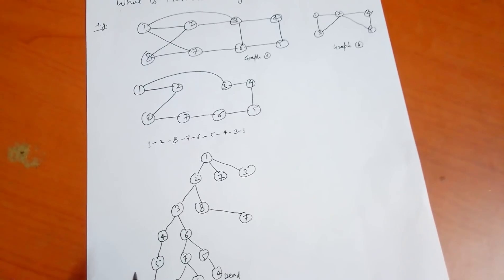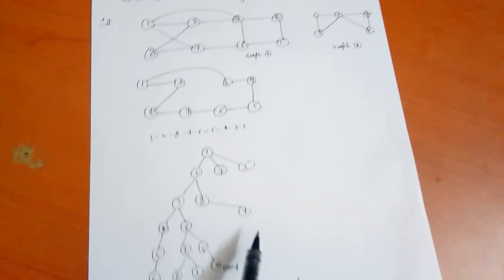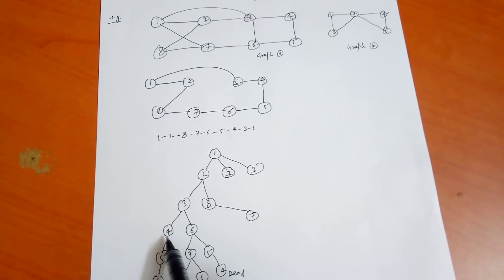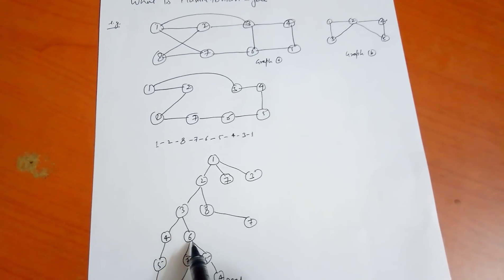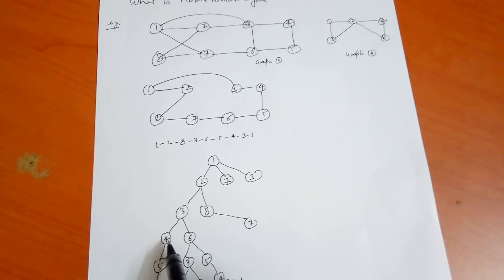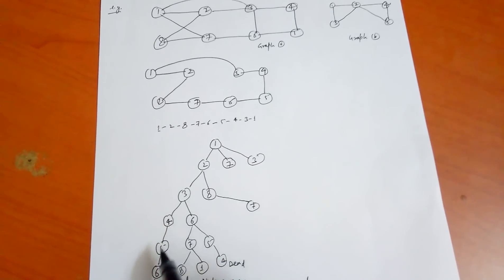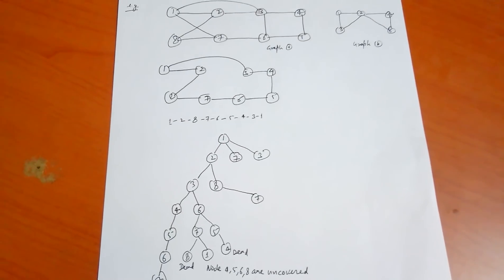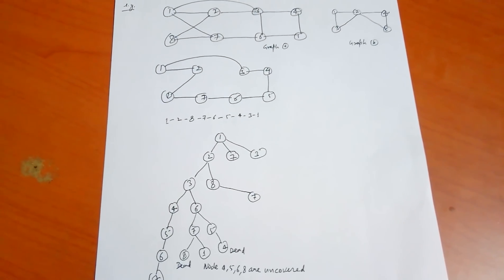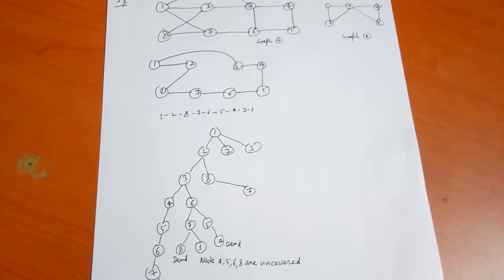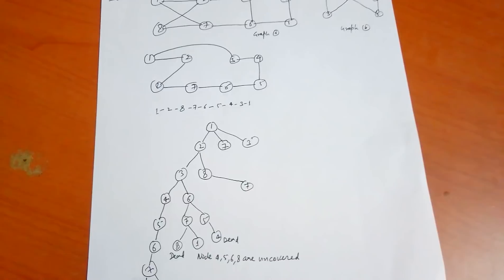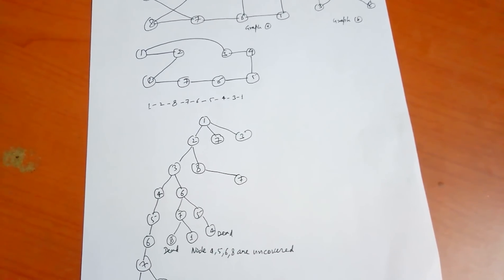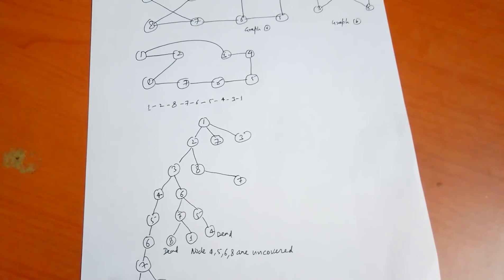From node 3 we can go to node 4 or node 6. If we go to node 4, then from 4 to 5, then 5 to 6, then 6 to 7, then 7 to 1. But if we return from node 7 to node 1, node 8 is uncovered and not yet visited, so this cannot be a Hamiltonian cycle. If from node 7 we go to node 8, then from 8 we cannot return to node 1 — so it is a dead end.